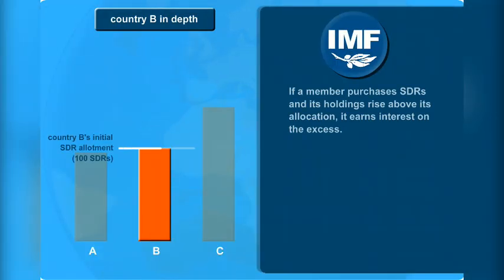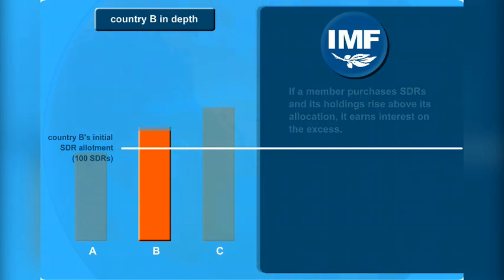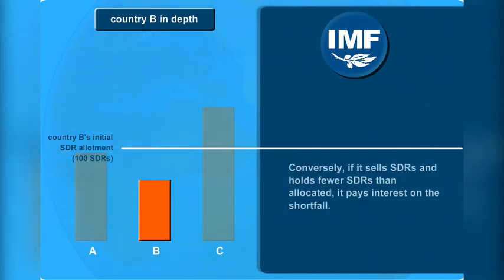If a member purchases SDRs and its holdings rise above its allocation, it earns interest on the excess. Conversely, if it sells SDRs and holds fewer SDRs than allocated, it pays interest on the shortfall.